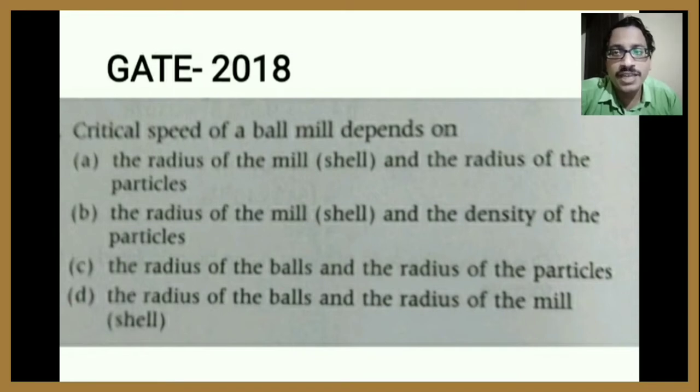Option B: the radius of the mill and density of the particle. Option C: the radius of the ball and radius of the particle. Option D: the radius of the ball and radius of the mill.